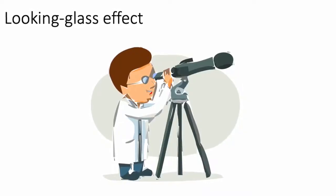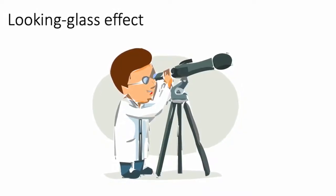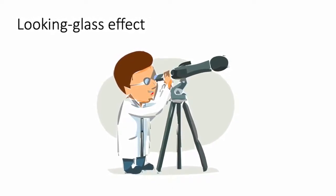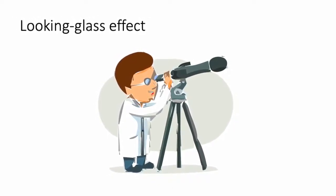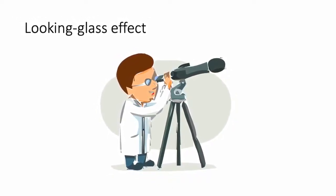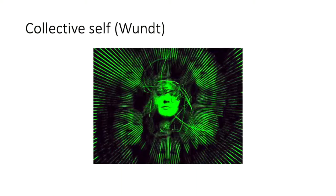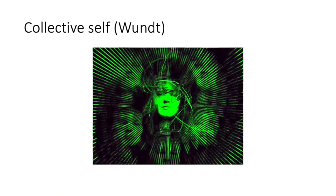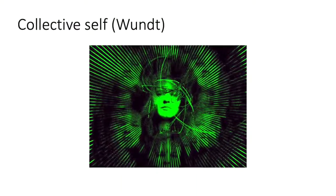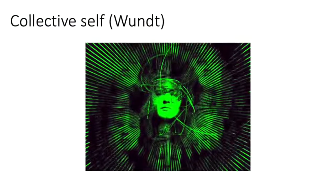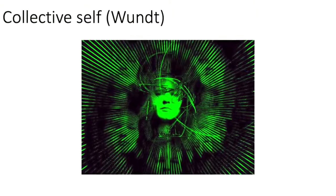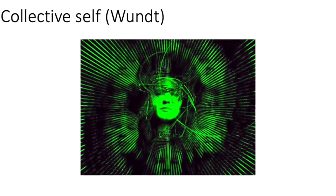The looking-glass effect is a self-derived perception in which we see ourselves as others see us. The collective self, according to Wundt, was proposed to be a group mind in which the self and the group have a distinction.